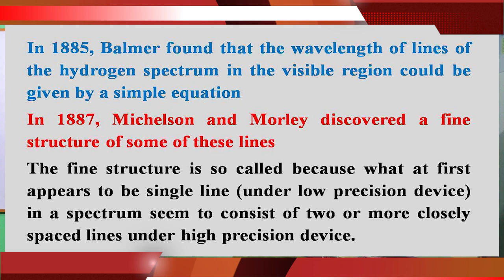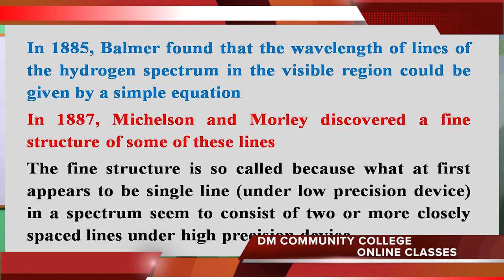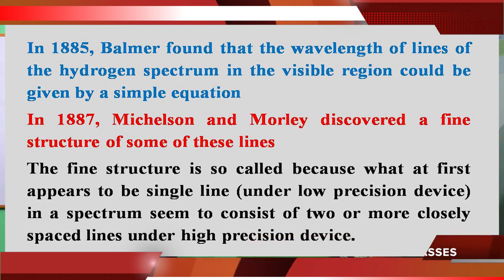In order to understand this, we have to go to some models. We'll start with the Bohr atomic model. Before that, I'll give a reference to Balmer. In 1885, Balmer discovered the equation known by his name — Balmer's equation. That equation could exactly fit the wavelengths of the spectra in the visible region of a hydrogen atom. Those spectra are nowadays called the Balmer series.